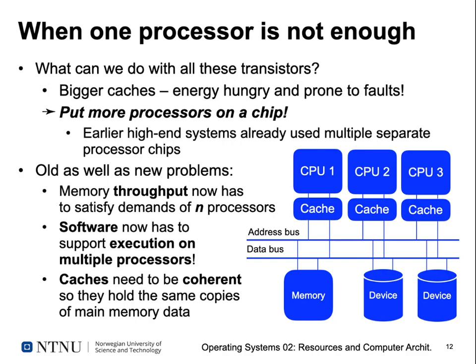An additional problem is that caches contain copies of main memory contents. If two CPUs operate on the same data and have copies of it in their caches, these copies may become incoherent — CPU 1 has a different version than CPU 2. When one CPU writes back data from its cache to main memory, the other CPU's cached value becomes incorrect. This leads to very difficult-to-find bugs. We need mechanisms to snoop cache transfers over buses, detect when a value changes in one cache, and update all other caches holding a copy of that value, making hardware much more complex.